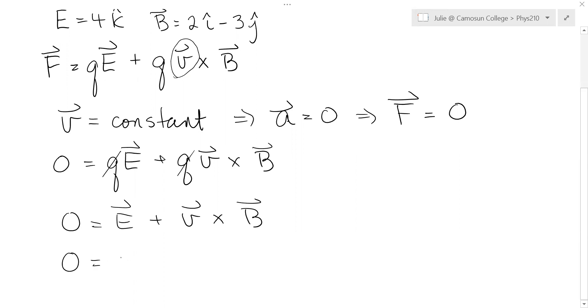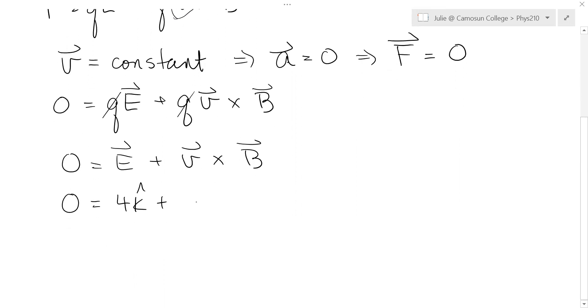So we have zero, the electric field is 4k hat. Now the velocity vector, we don't know what components it has, but this cross product, let's write it out as a matrix, x component of velocity, y component, and z component.